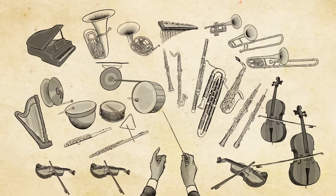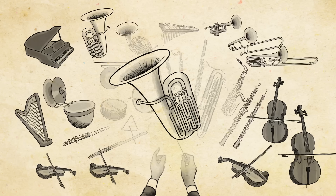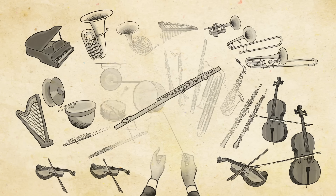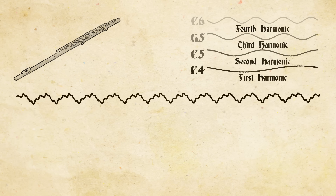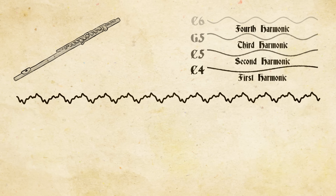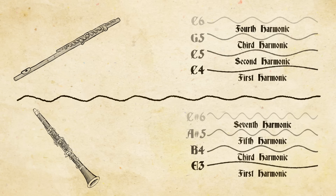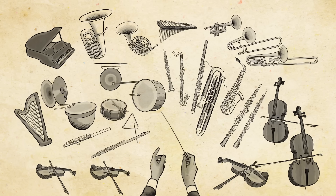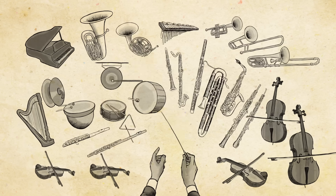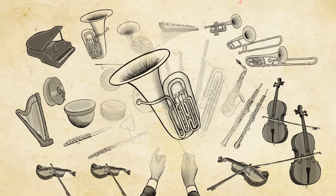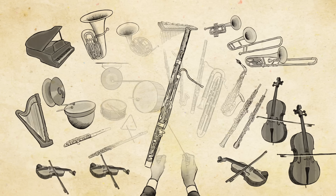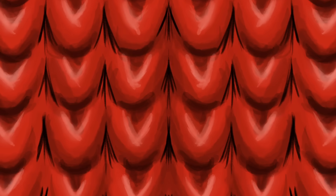Virtually all acoustic instruments produce harmonic series, but each instrument's shape and material changes the balance of its harmonics. For example, a flute emphasizes the first few partials, but in a clarinet's lowest register, the odd-numbered partials resonate most strongly. The strength of various partials is part of what gives each instrument its unique sonic signature, and it also affects an instrument's ability to stand out in a crowd, because our ears are more strongly attuned to some frequencies than others.